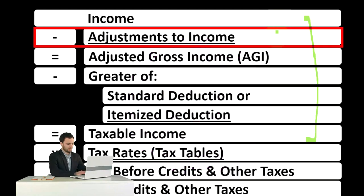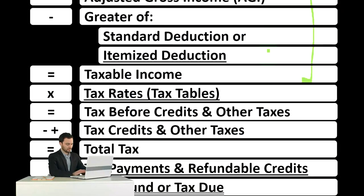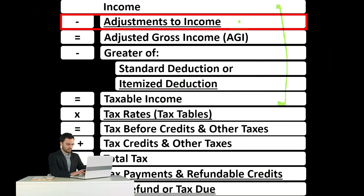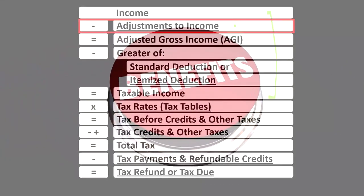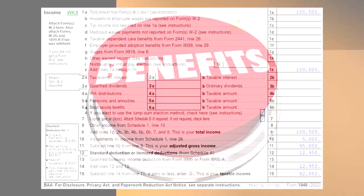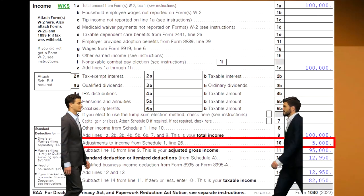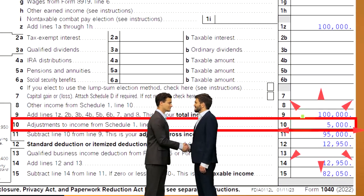Note that the adjustments to income do not have the same kind of threshold as itemized deductions, which have to clear the standard deduction before we get a benefit. So if we qualify for the adjustments to income, we typically get a benefit from them. Also note that adjustments to income might be called above-the-line deductions or Schedule 1 deductions. On the first page of Form 1040, we're focused on line 10 — adjustments to income, Schedule 1 line 26.